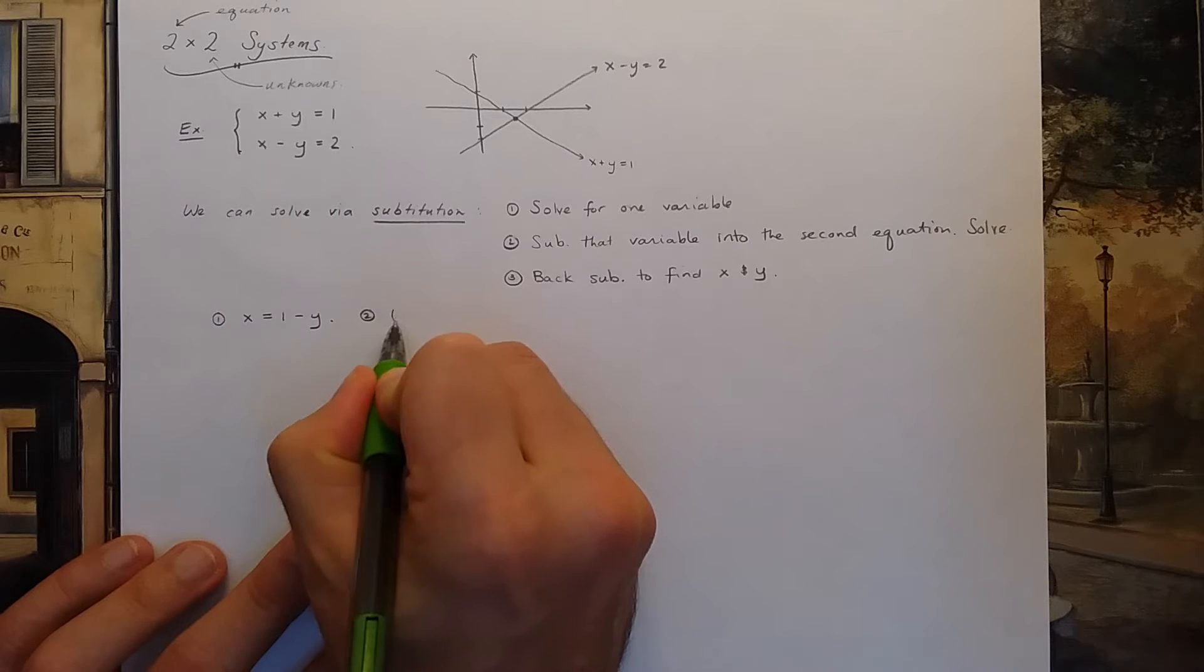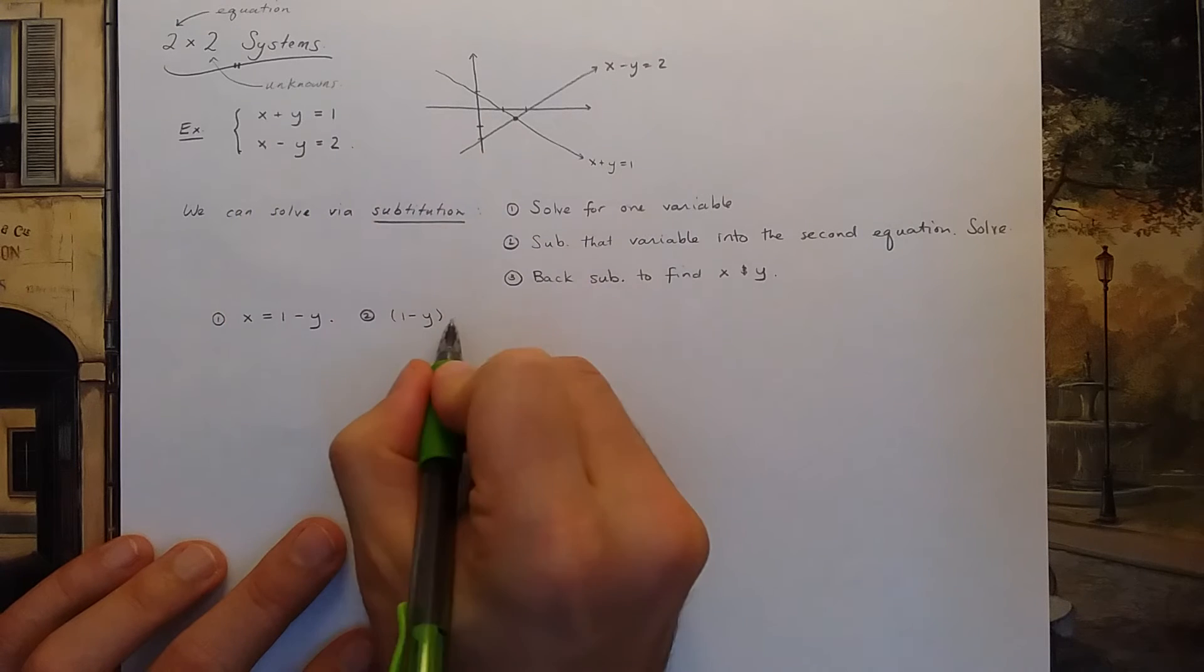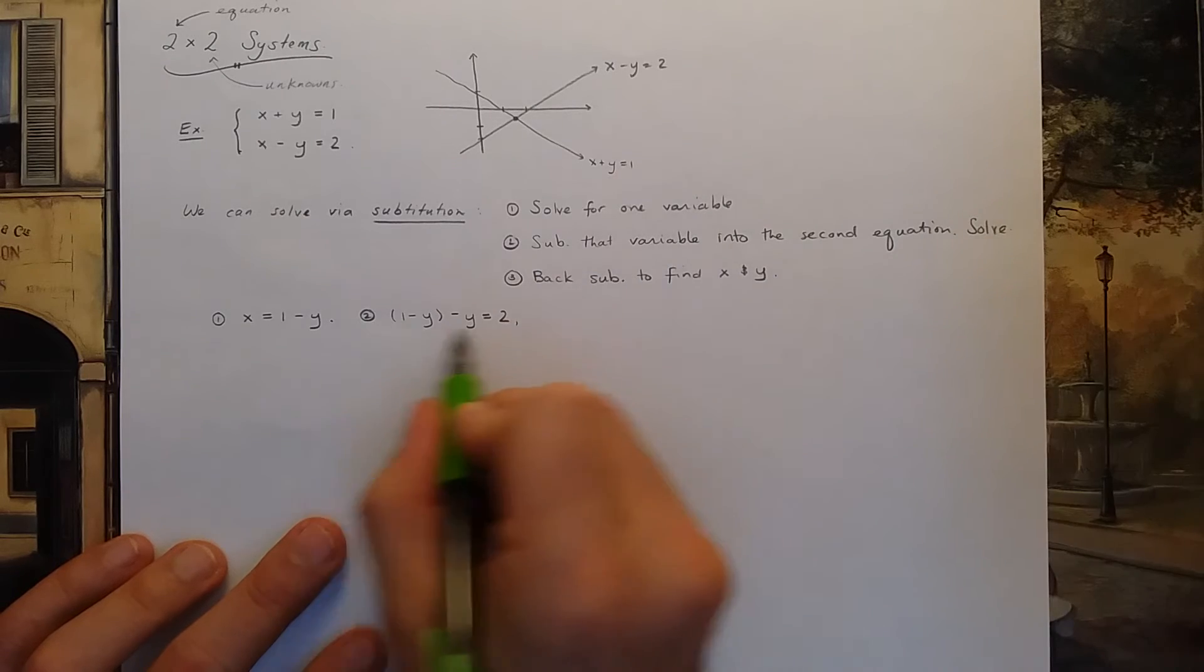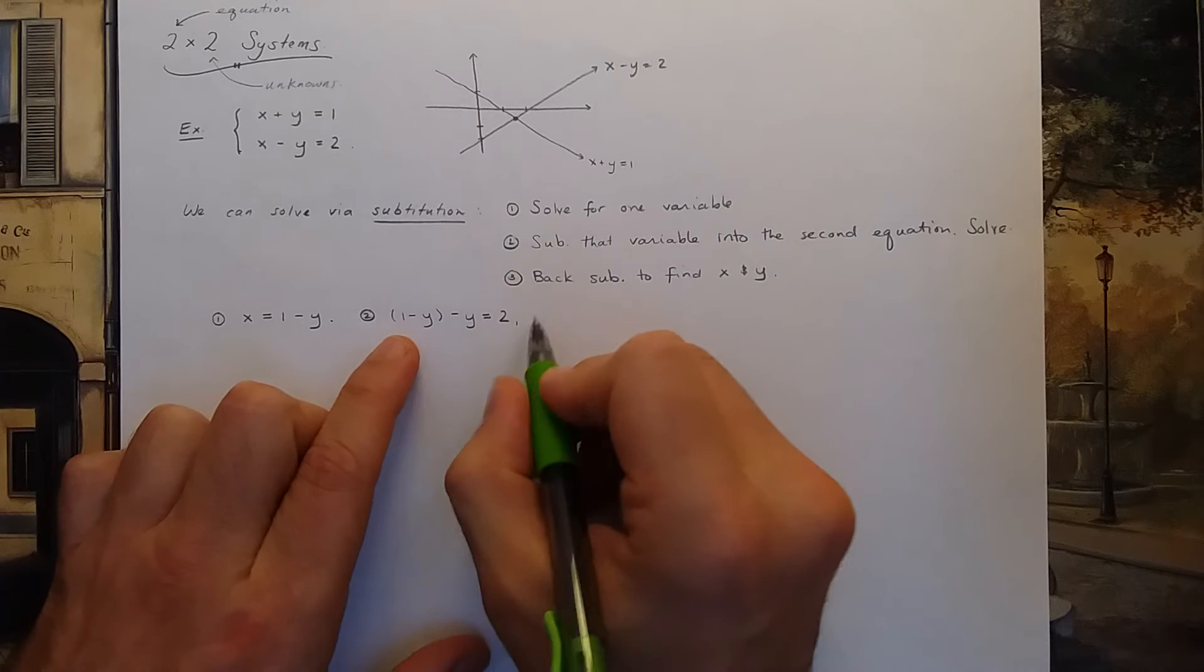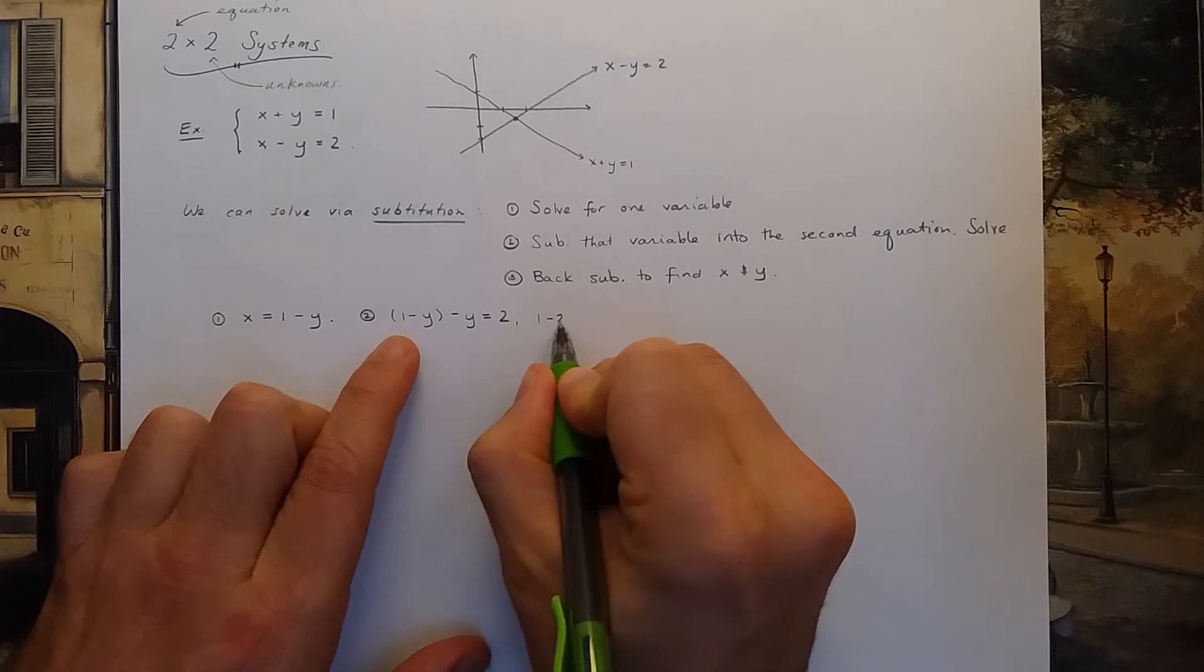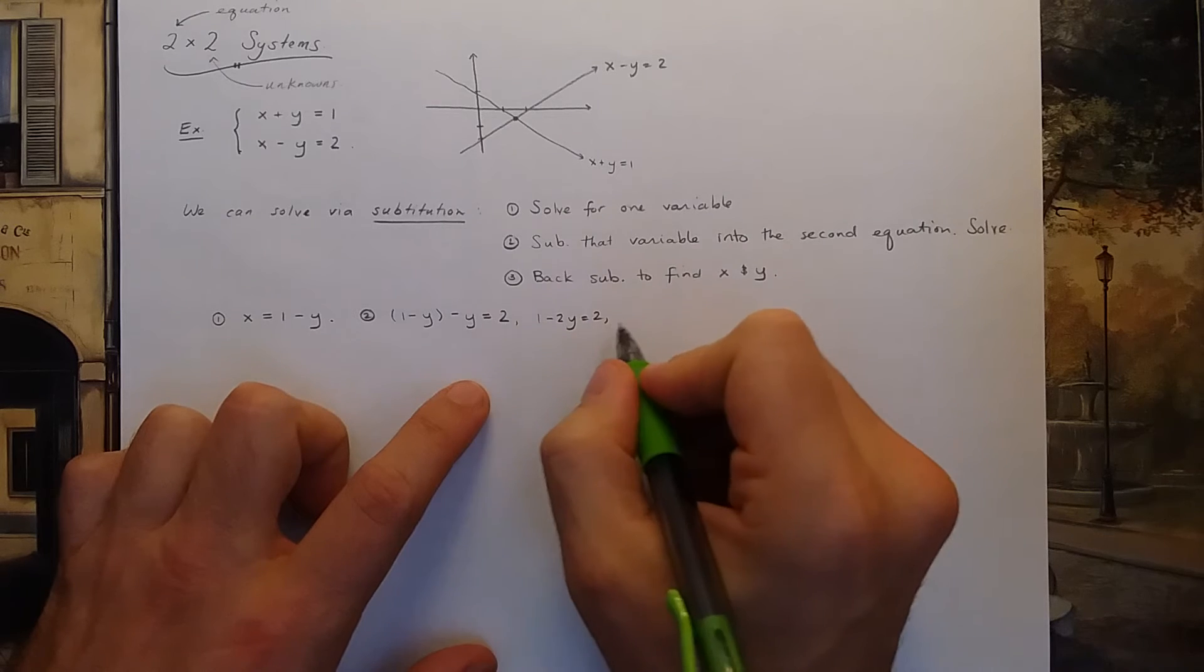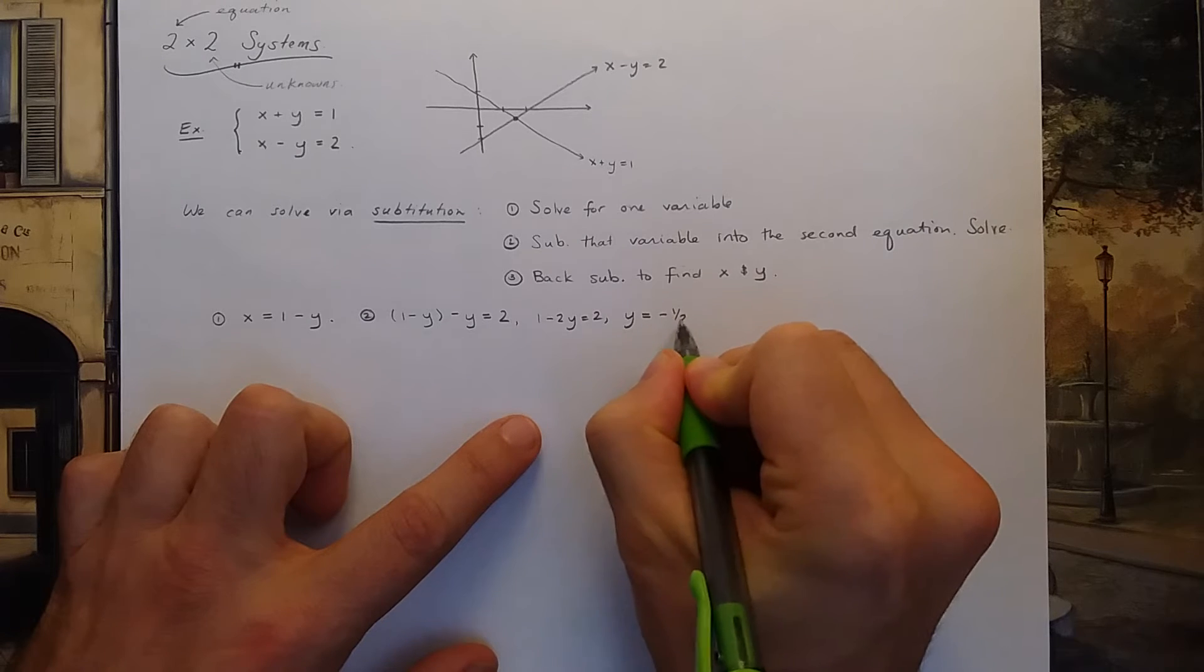Step 2 would be substitute this x into the second equation. So if I do that, I get 1 minus y, see that's my x, minus another y is equal to 2. So I can now solve this equation pretty easily for y. If you do, you'll get 1 minus 2y is equal to 2. You could subtract 1 on both sides, divide by negative 2. I believe you get y is equal to negative 1 half.